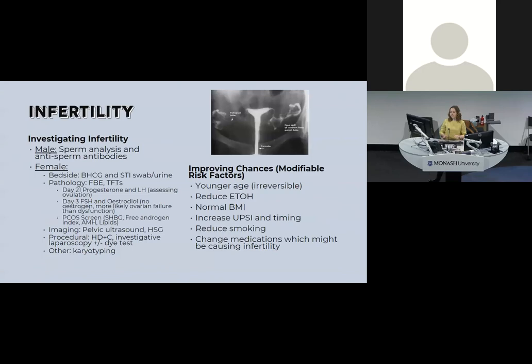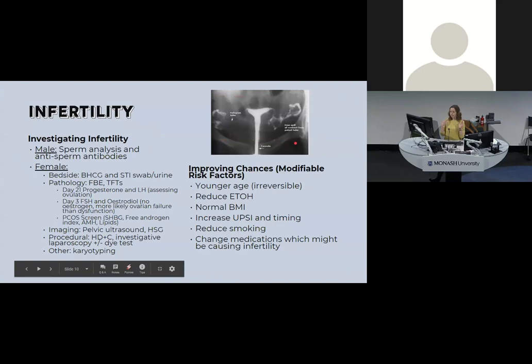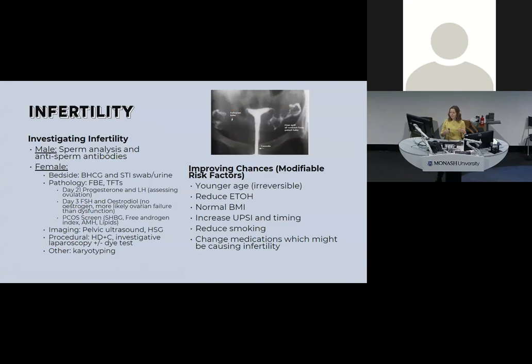Investigating infertility in general: for males, semen analysis and anti-sperm antibodies. For females, beta-HCG first to make sure they're not already pregnant, then an STI swab and urine check. Hormone levels: day 21 progesterone and LH; day 3 FSH, estradiol, and a PCOS screen. Imaging includes ultrasound and HSG — hysterosalpingography — where contrast dye is inserted via cannula into the uterine cavity and X-rays confirm tubal patency. Procedurally, hysteroscopy, investigative laparoscopy, dye tests, and karyotyping may also be done.